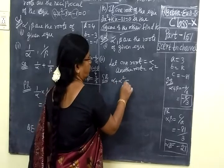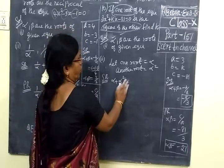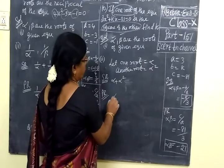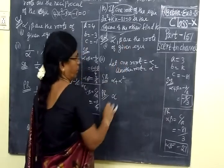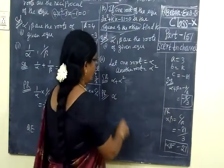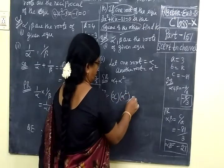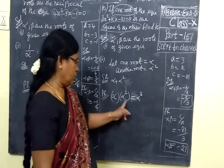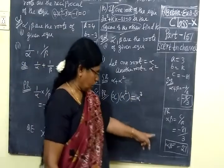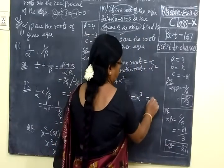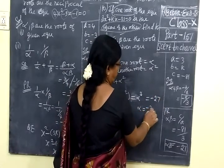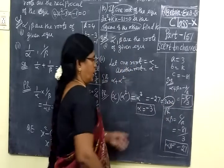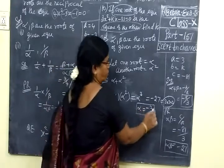Alpha plus alpha squared is the sum of roots. For the product of roots: alpha multiplied by alpha squared equals alpha cubed. Alpha cubed equals minus 27, so alpha equals minus 3. Product of roots from the equation is minus 27.